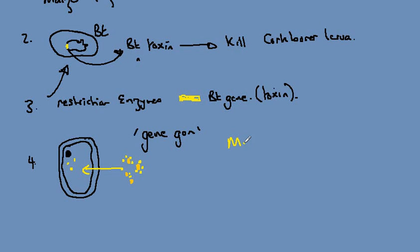The maize cells have the Bt gene, which means that when switched on they can make the Bt toxin, which means they can kill the larvae.